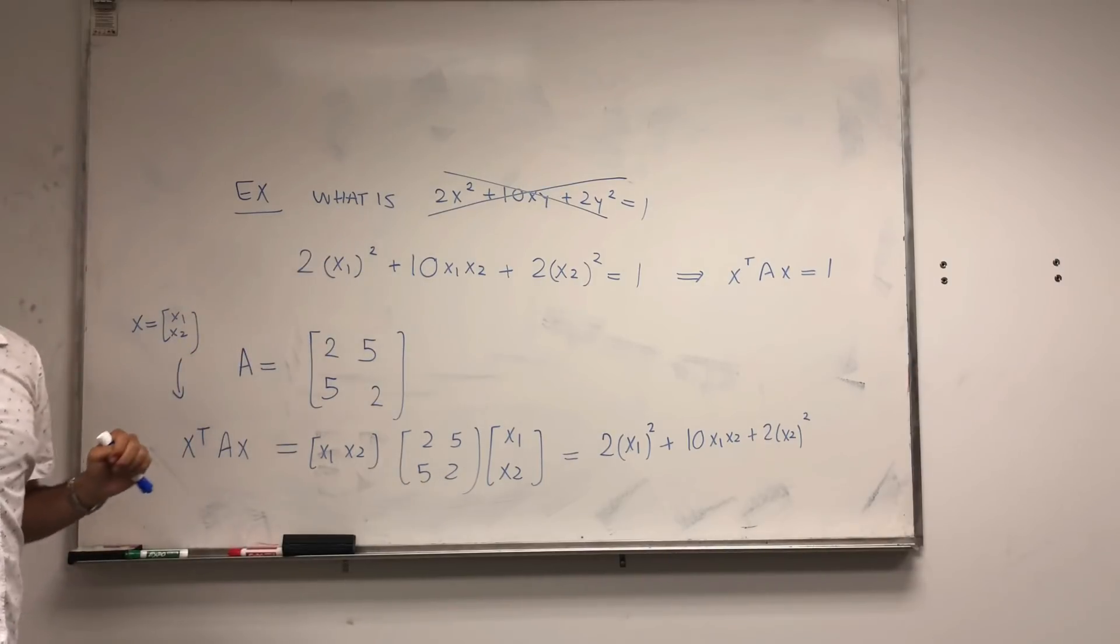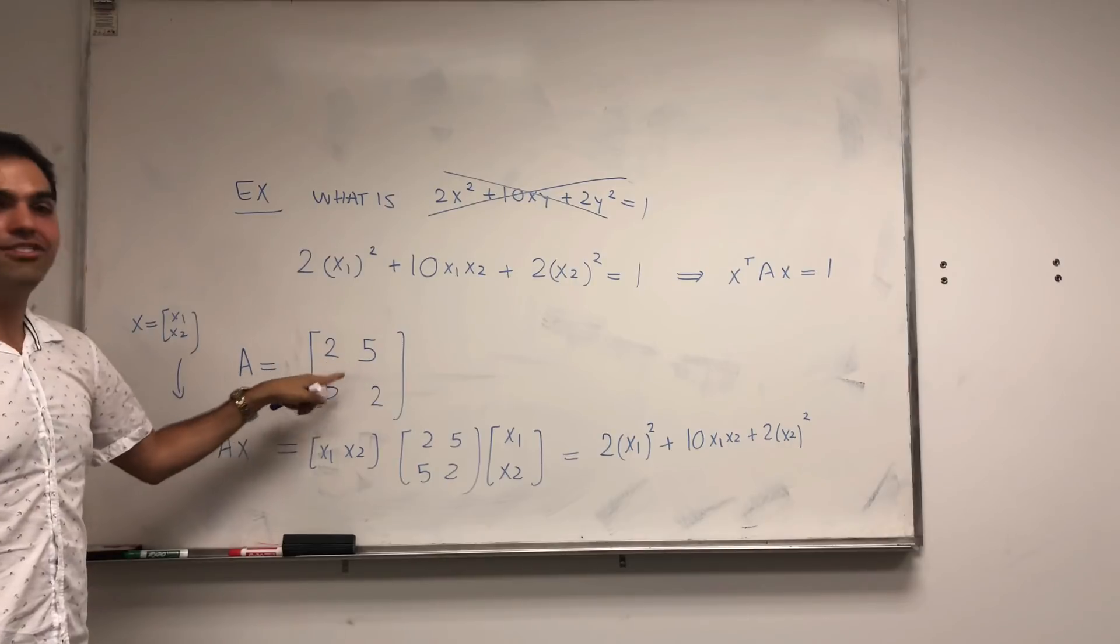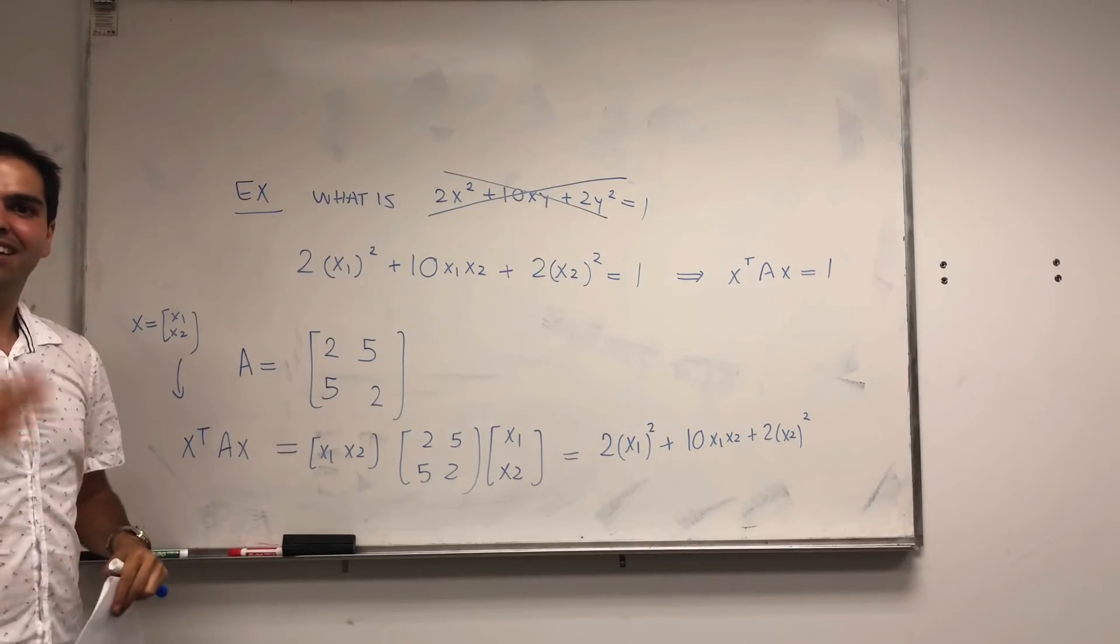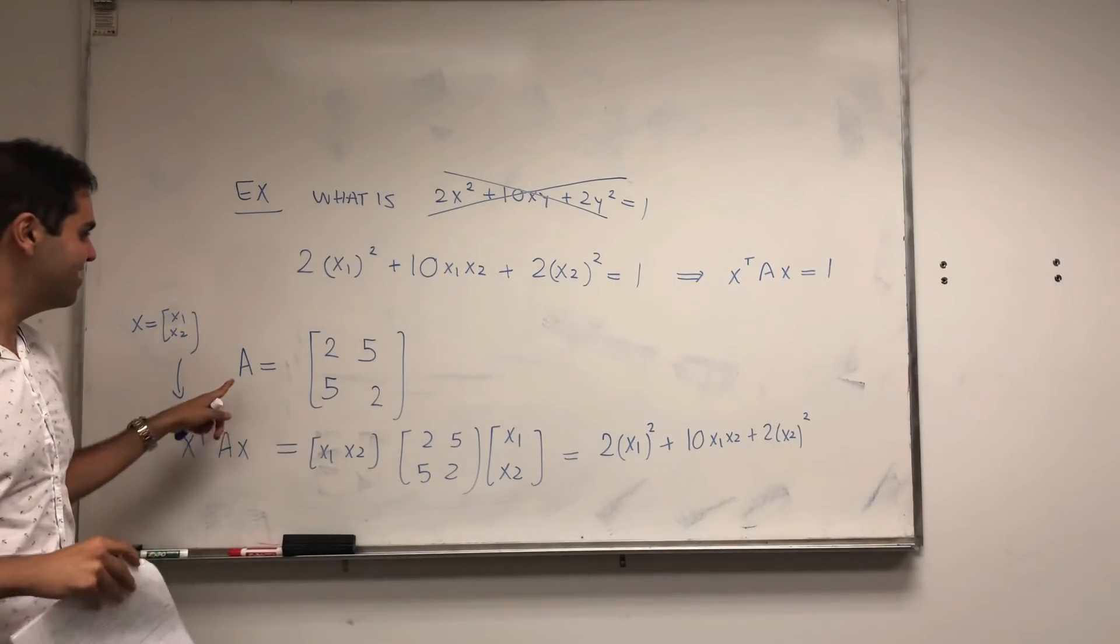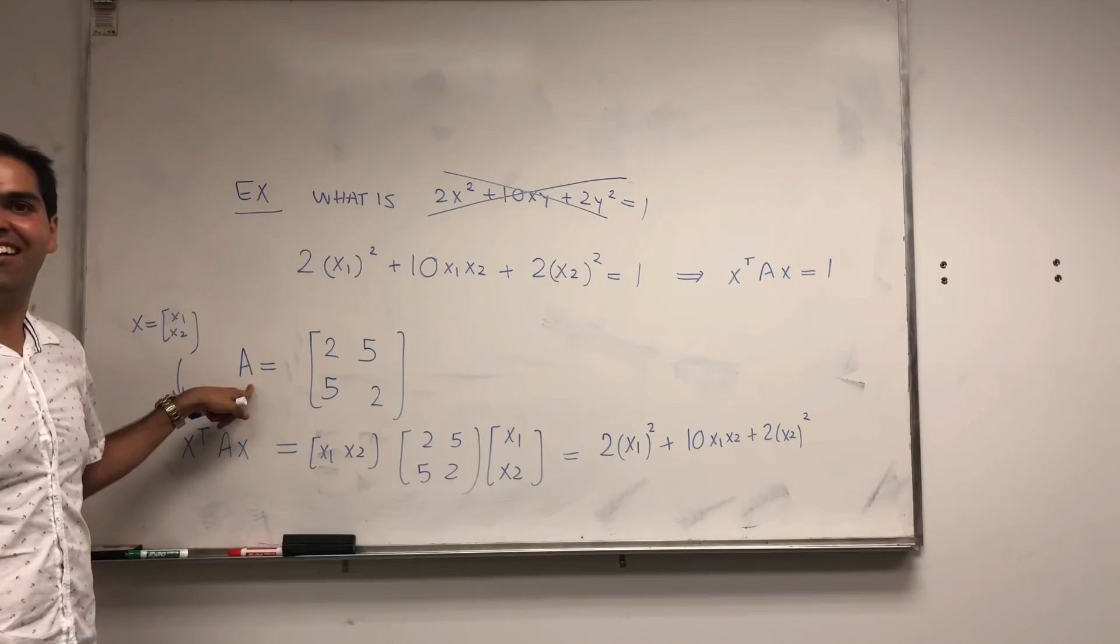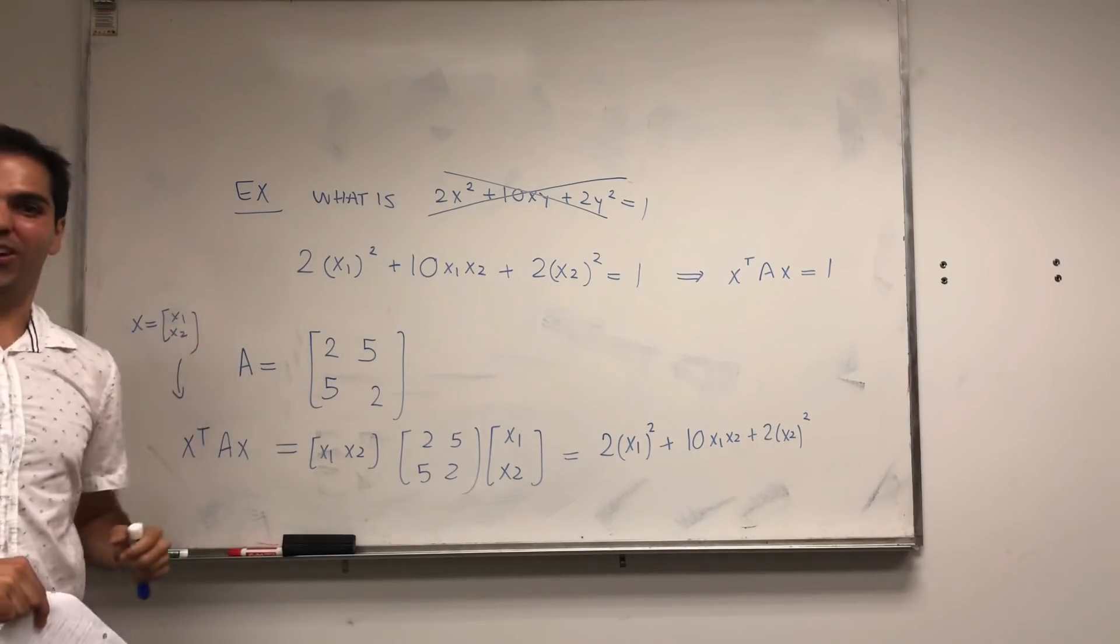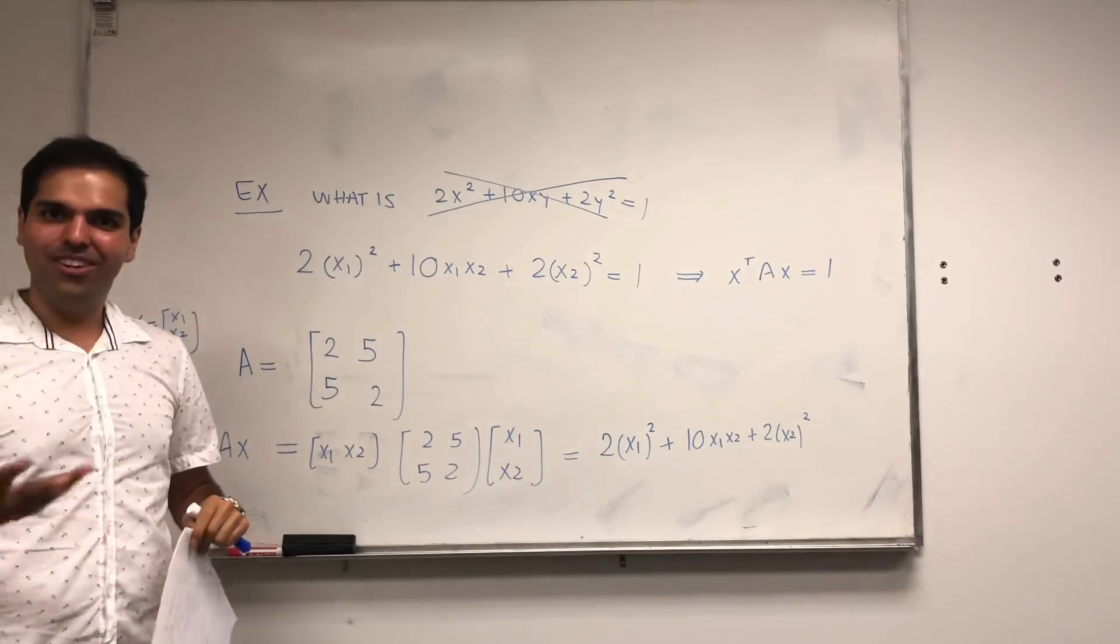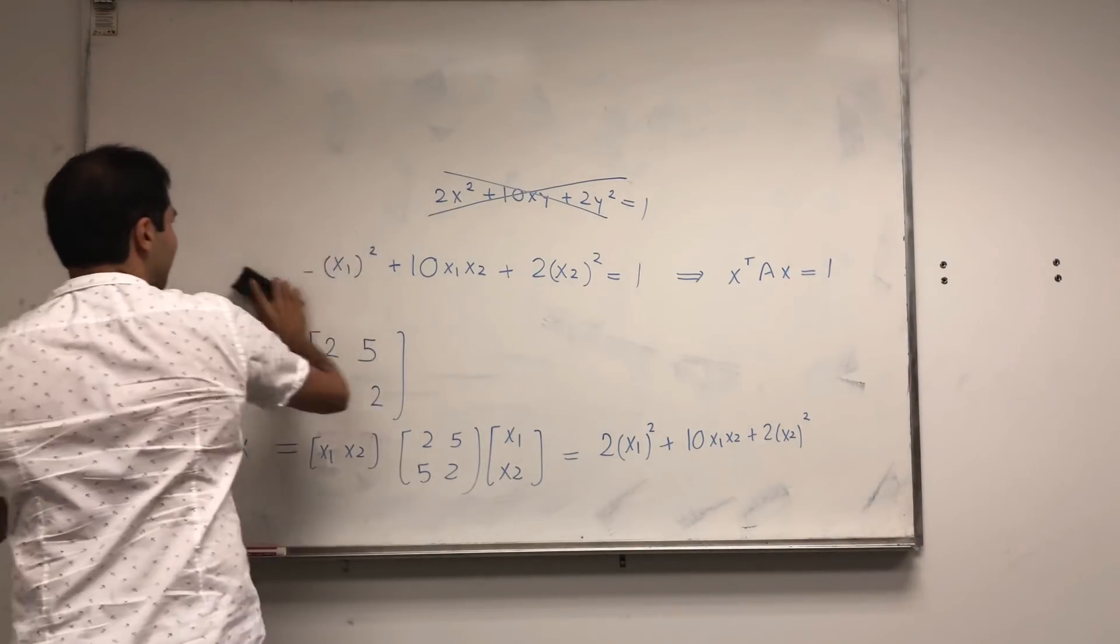But now, here comes where we solve the problem, and for this, we have to use the fact that A is symmetric. The nice thing is, there's something called the spectral theorem that says any symmetric matrix, we can actually diagonalize them, and not only that, we can super-diagonalize them, what's called orthogonally diagonalize. So let's do that.